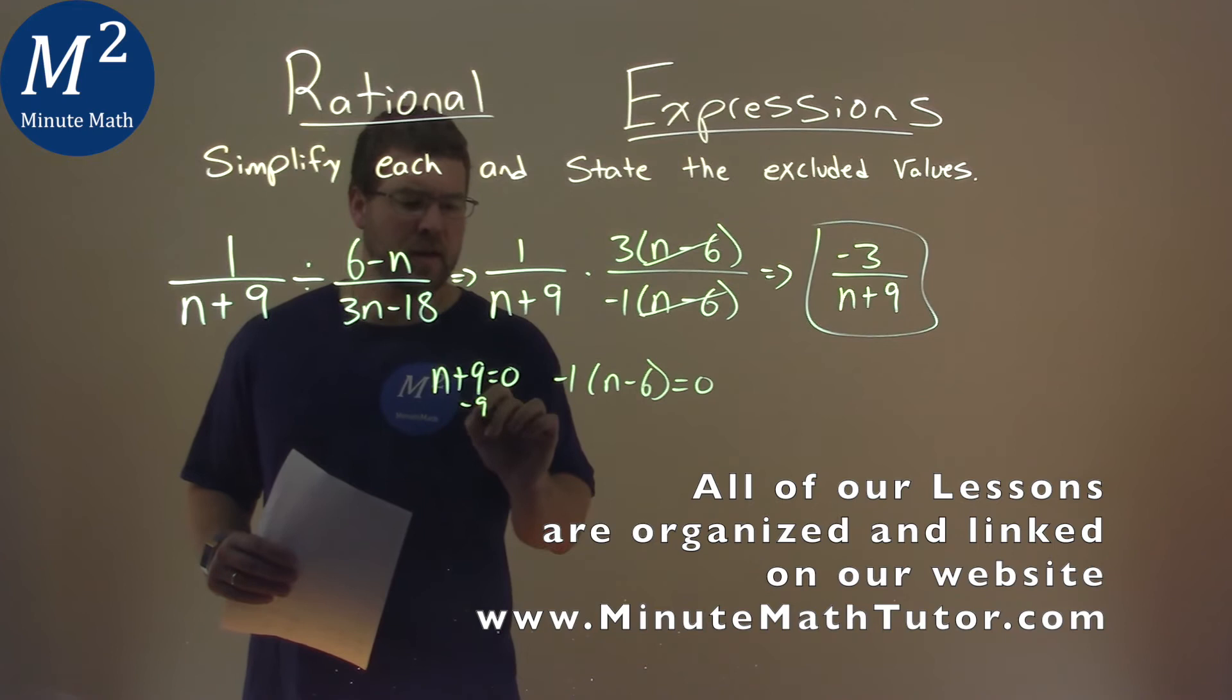Now we're solving. Subtracting 9 from both sides, n equals negative 9.